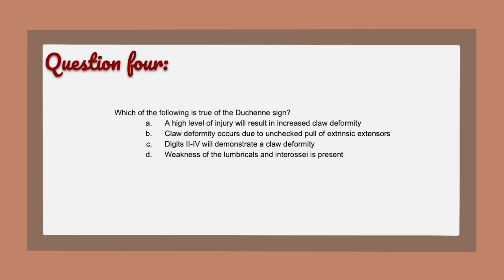Question 4: The correct answer is D. First, knowing that the Duchenne sign refers to clawing of the ring and small finger — a lower level of injury will actually result in increased clawing as the FDP returns. Claw deformity occurs due to unchecked pull of the FDP with no intrinsic power. Digits two through four will not claw — it will be digits four and five for the ulnar nerve.